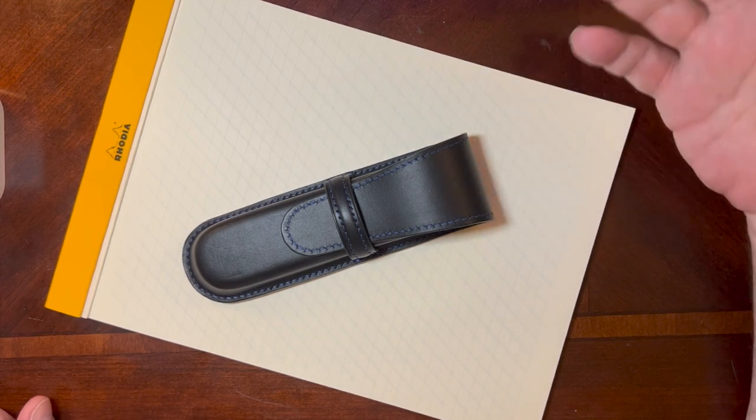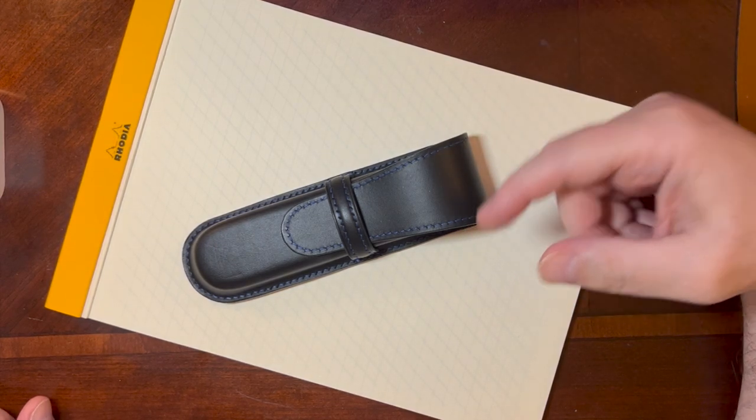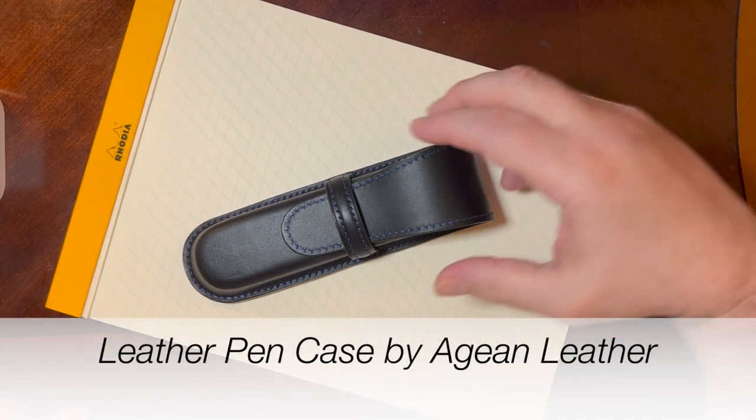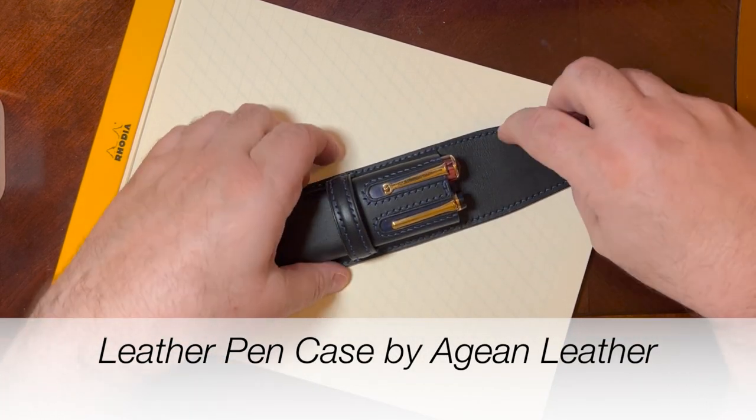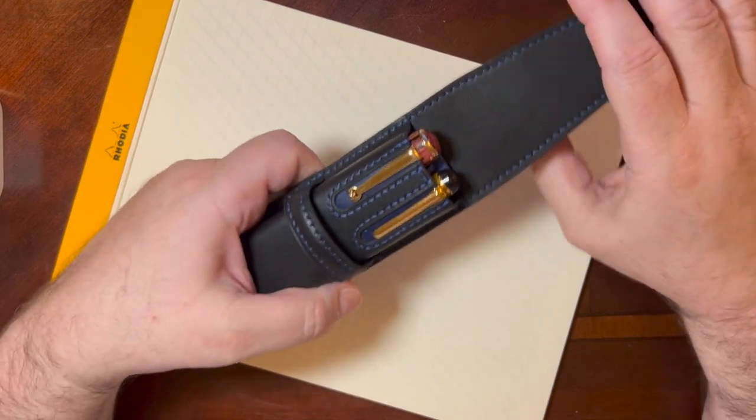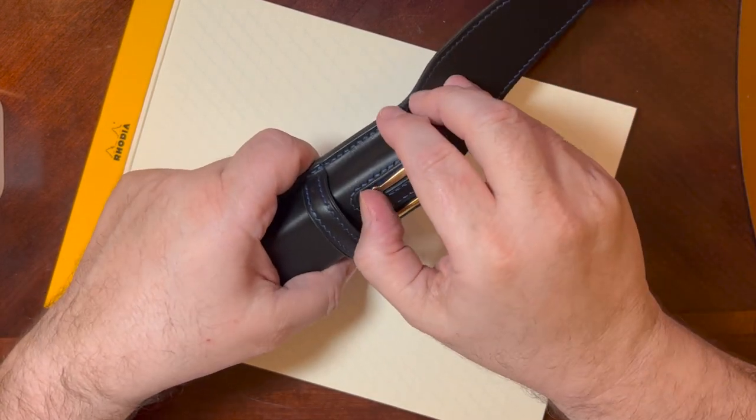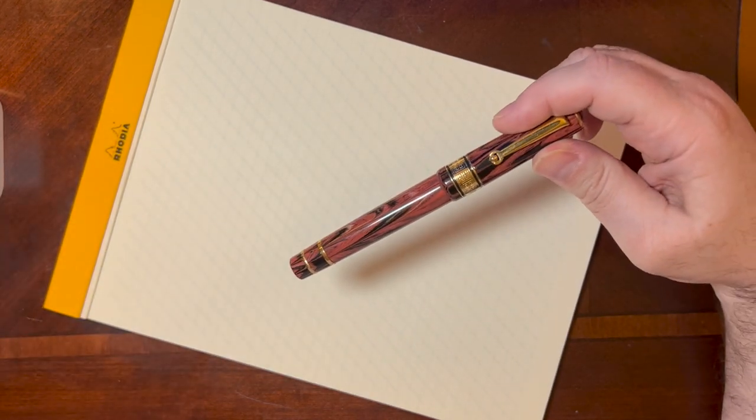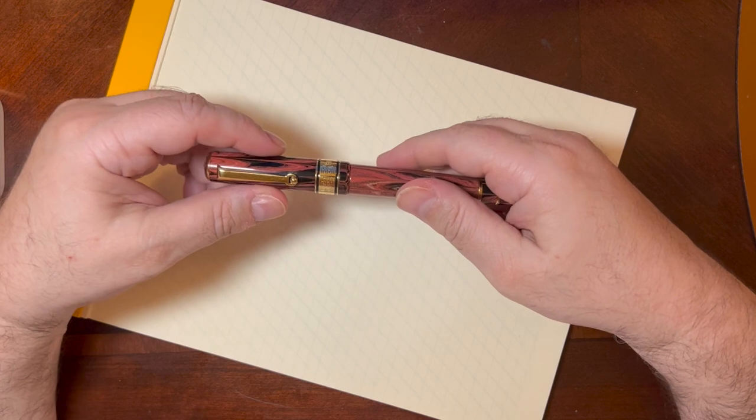But here what they did is expand into a larger format size nib. This is their size eight nib. It doesn't exactly correspond to the Mont Blanc 149 number nine nib. This number eight nib by Santini, I'm not quite sure how they size it, but it's actually larger than the Mont Blanc 149.